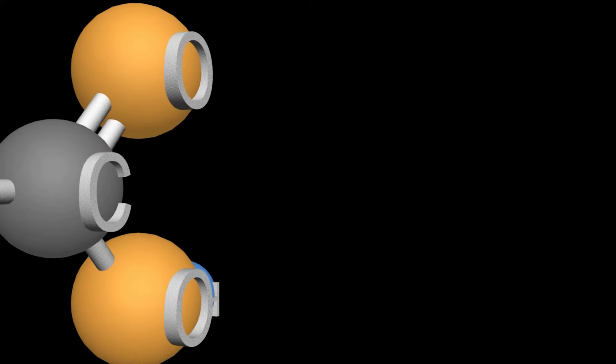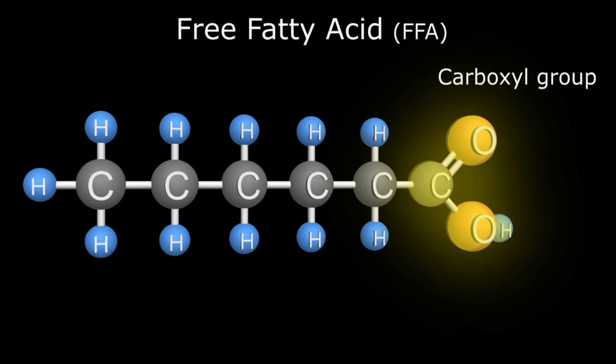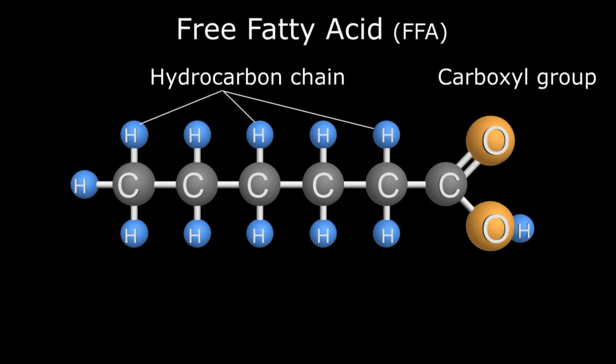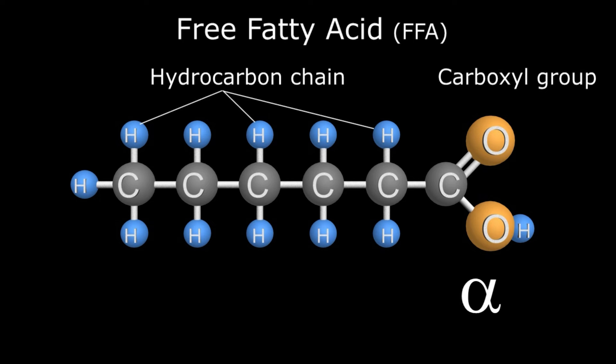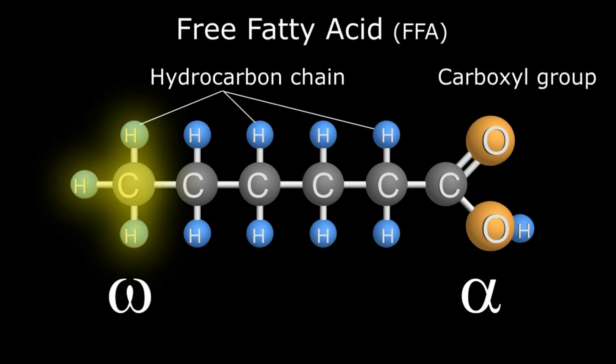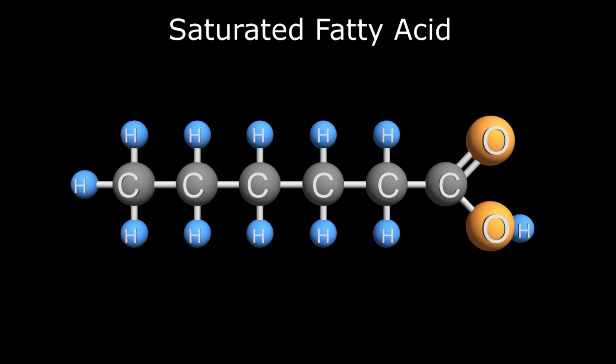Before we get started, we need to go over a few definitions. First and foremost, I want to talk about a free fatty acid. It has a carboxyl head at one end with a hydrocarbon chain on the other end — we call it a hydrocarbon chain because it's made up of carbons and hydrogen. The side that has the carboxyl head is called the alpha side of the free fatty acid. The other side, the far end — the last carbon and hydrogen — is called the omega end of that fatty acid.